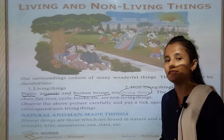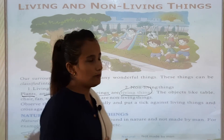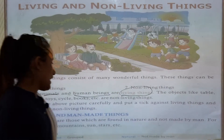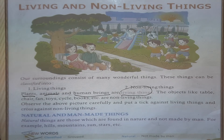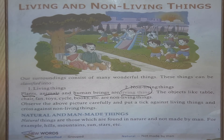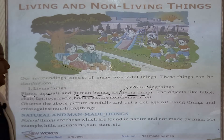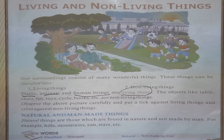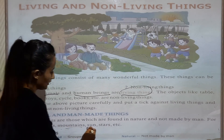But the man-made things are buses, vehicles, cars, pencil, paint — they are man-made things. Natural things are those which are found in nature and not made by man. For example, hills, mountains, sun are natural things.